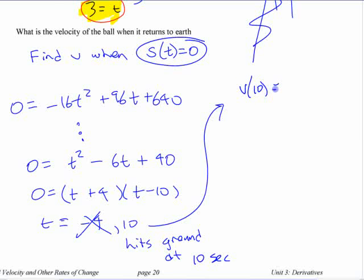Velocity of 10 is, what did we say it was? Negative 32 times 10 plus 96. Is that right? So it's going 224 feet per second downwards, right? That is fast.